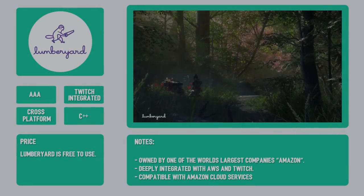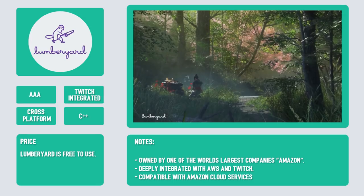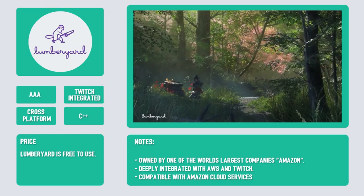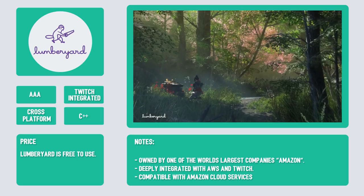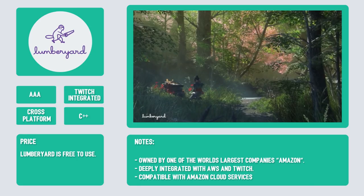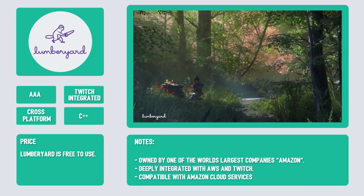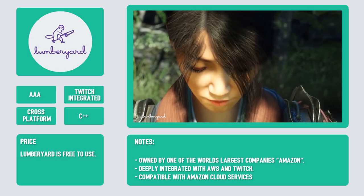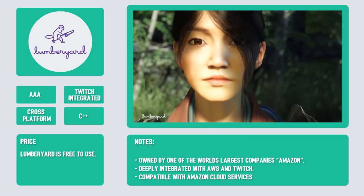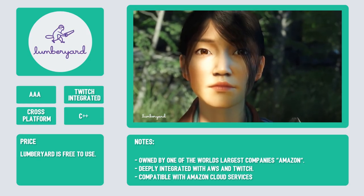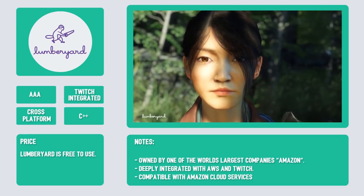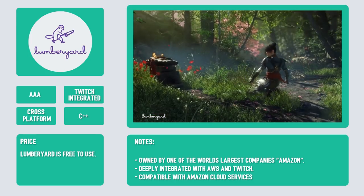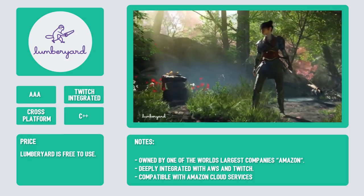The next engine on our list comes to us from one of the biggest companies in the world: Amazon. The company that owns Twitch also has its very own game engine. Amazon Lumberyard is a free, cross-platform AAA game engine. It's also deeply integrated with Amazon Web Services and Twitch, meaning if your game requires cloud-connected features or has a Twitch component, Lumberyard may be a perfect solution.